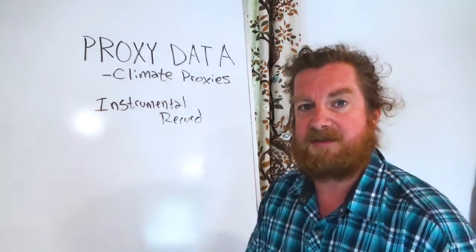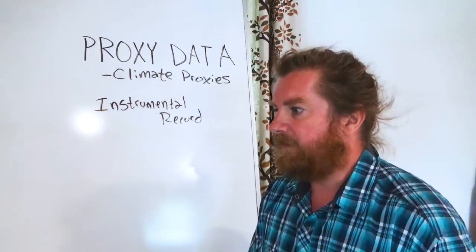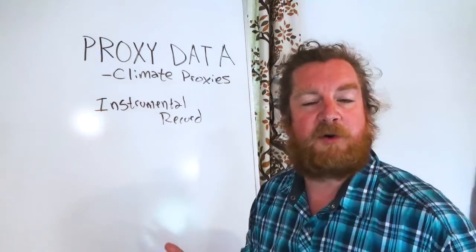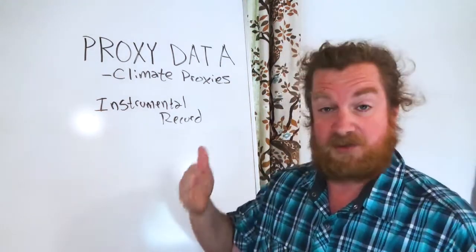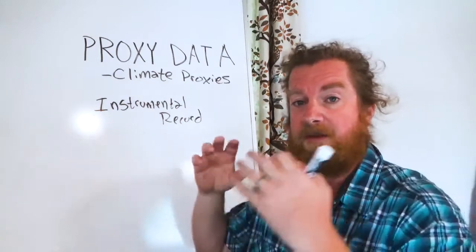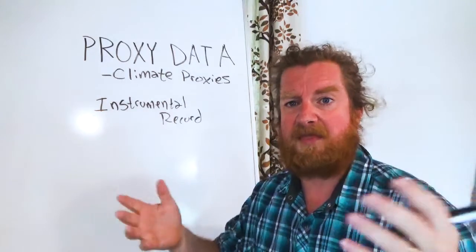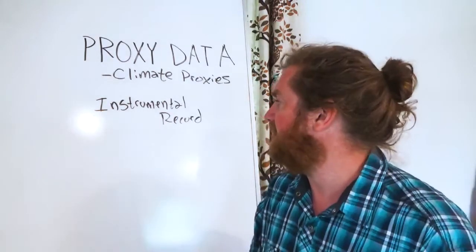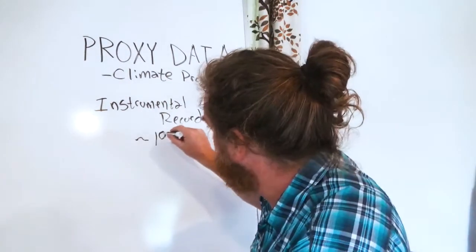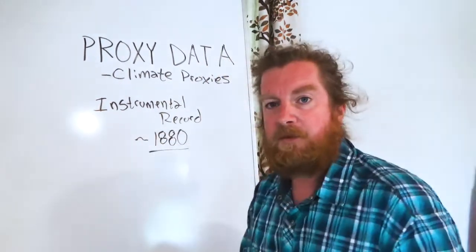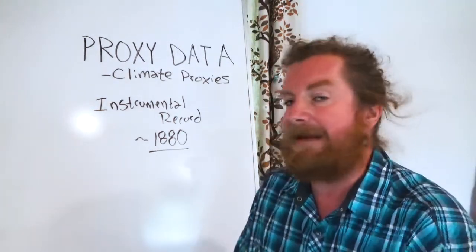The instrumental record — we've been able to measure temperature for quite a while, but really when we started systematically measuring temperature every day and keeping track of climate observations, that really doesn't go back much farther than the late 1800s. A good date to keep in mind for the beginning of the instrumental record is about 1880.